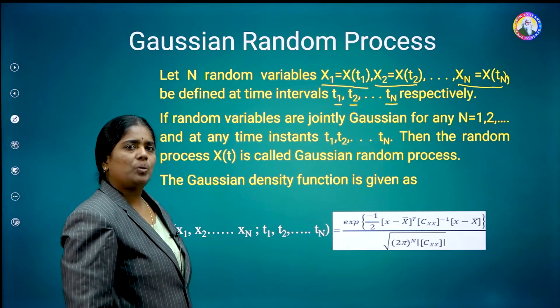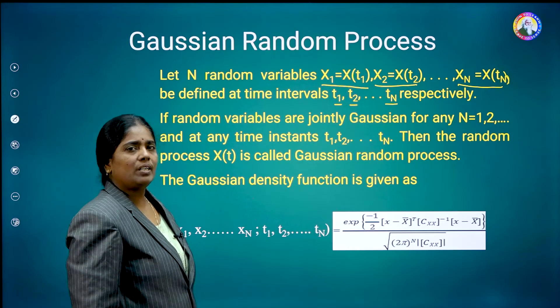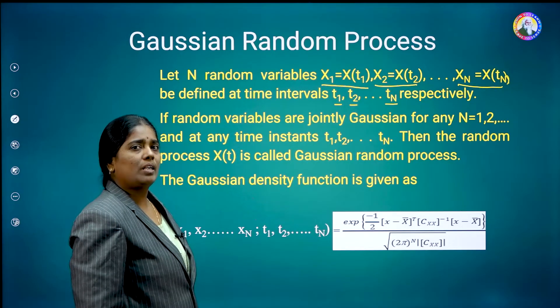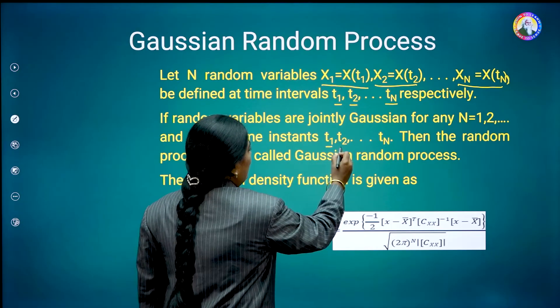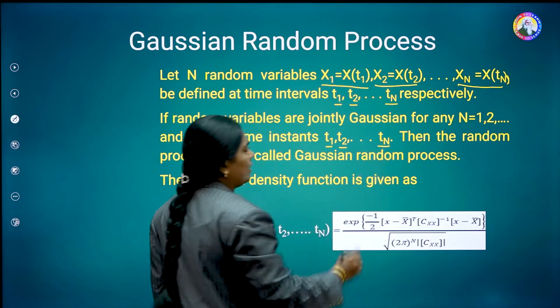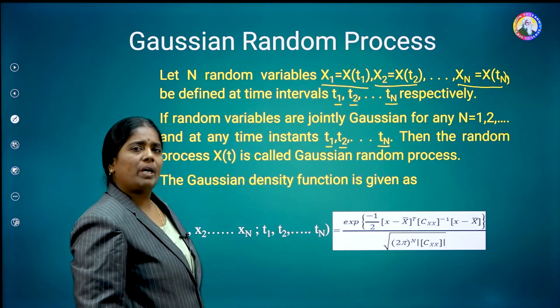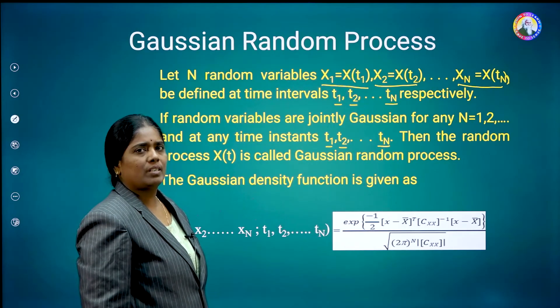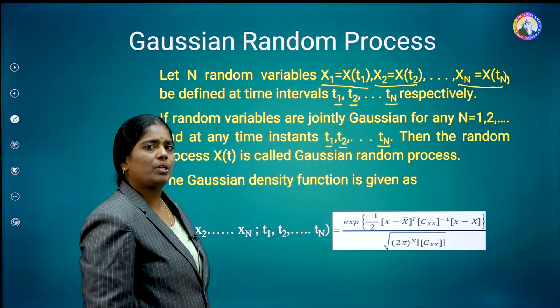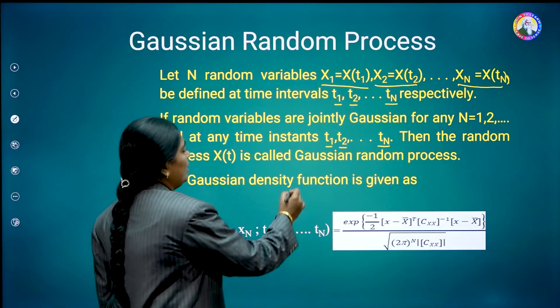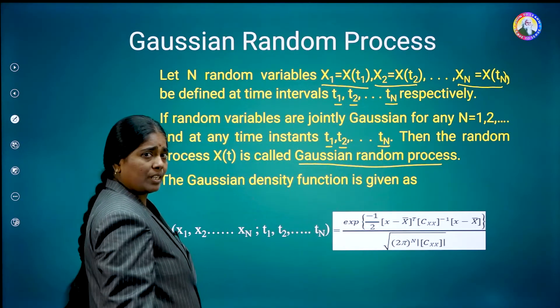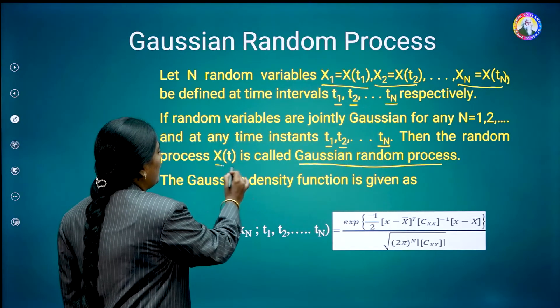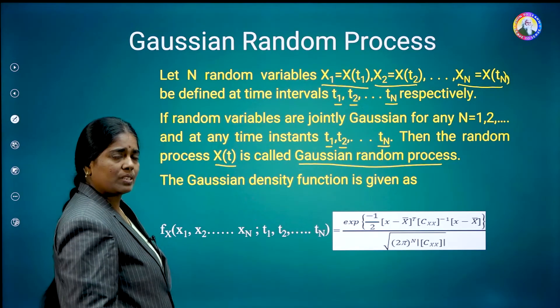Then, we can define jointly Gaussian random variable at the different times, like t1, t2, so on, tn. Like that, by including the time t in that, the respective Gaussian random variable will become a Gaussian random process. If you have defined x of t like that, at the different times, that entire region is the Gaussian random process.